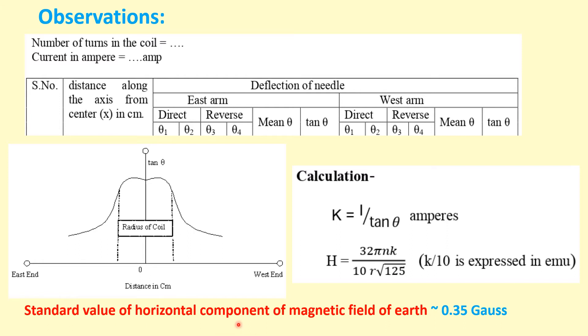The standard value of this component is around 0.35 gauss. Gauss and oersted are the small units of magnetic field and tesla is a big unit. The relation is 1 gauss equal to 10 to the power minus 4 tesla.